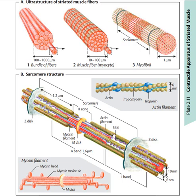The I-bands are at the position where the actin filament does not intersect with the myosin filament. The A-bands are where the actin filament intersects to the M-disc. The A-bands are approximately 1.6 micrometres. The dimension of one myosin filament is 10 nanometres, and one actin filament is 6 nanometres.